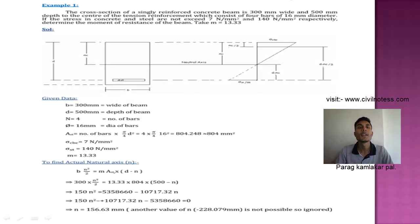Now let's go to the problem. The cross section of a singly reinforced concrete beam is 300 mm wide and 500 mm depth to the center of the tension reinforcement which consists of 4 bars of 16 mm diameter. So 300 mm is the width and 500 mm is the effective depth. This is the effective depth, not the overall depth.